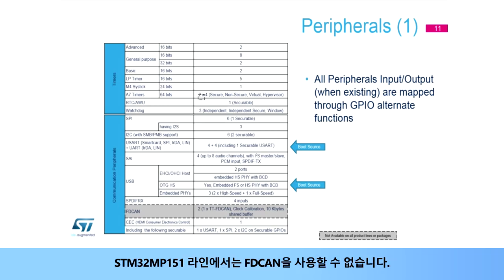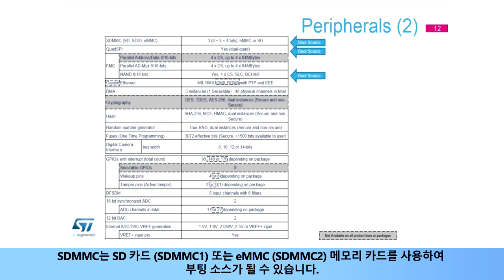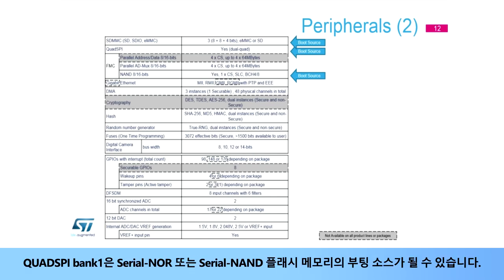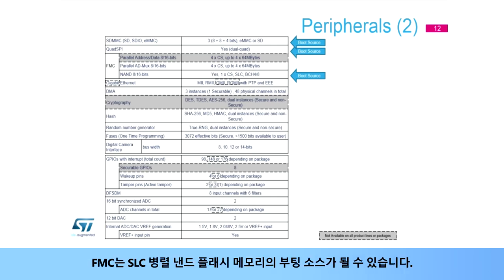Note that FDCAN is not available on the STM32 MP151 line. SDMMC can be a boot source using either SD Card (SDMMC1) or eMMC (SDMMC2) memory cards. Quad SPI Bank 1 can be a boot source for serial NOR and serial NAND flash memories. FMC can be a boot source for SLC Parallel NAND flash memories.